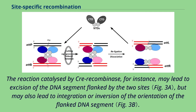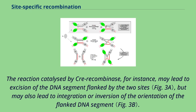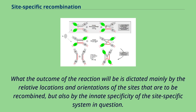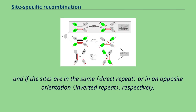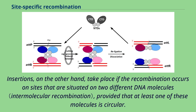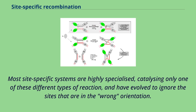The reaction catalyzed by CRE recombinase, for instance, may lead to excision of the DNA segment flanked by the two sites, but may also lead to integration or inversion of the orientation of the flanked DNA segment. What the outcome of the reaction will be is dictated mainly by the relative locations and orientations of the sites that are to be recombined, but also by the innate specificity of the site-specific system in question. Excisions and inversions occur if the recombination takes place between two sites found on the same molecule, and if the sites are in the same or in an opposite orientation, respectively. Insertions take place if the recombination occurs on sites situated on two different DNA molecules, provided that at least one of these molecules is circular. Most site-specific systems are highly specialized, catalyzing only one of these different types of reaction, and have evolved to ignore the sites that are in the wrong orientation.